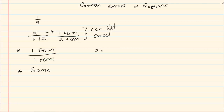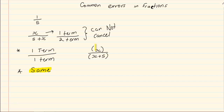For example, if I've got x over x plus 5. Now the top is one term and the bottom is two terms. But as soon as I put it in brackets, the top is one term and the bottom is one term. However, they are not the same because x is not the same as x plus 5.